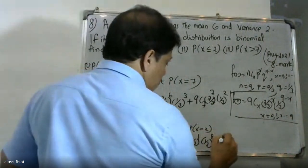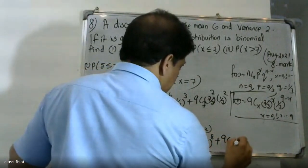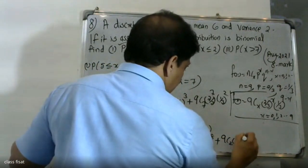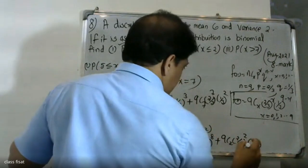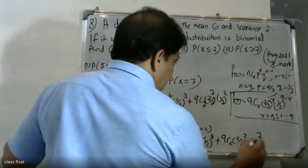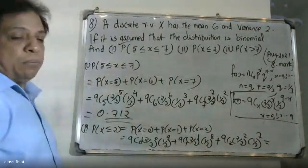For x=2: 9C2 times (2/3)^2 times (1/3)^7. Summing P(x=0) + P(x=1) + P(x=2) gives the calculated value for P(x ≤ 2).